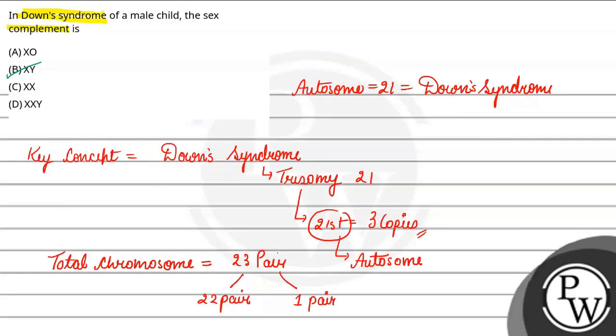So option jo correct answer hoga ki jo male complement ko suggest karta hai in the Down syndrome, it is option B. I hope you have understood the question well students, best of luck.